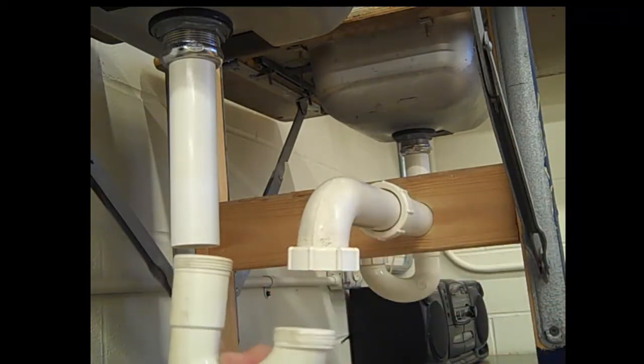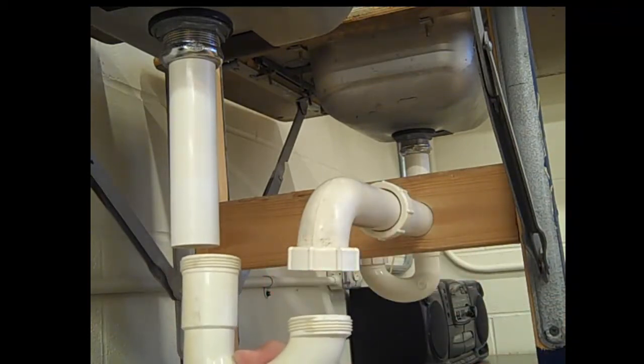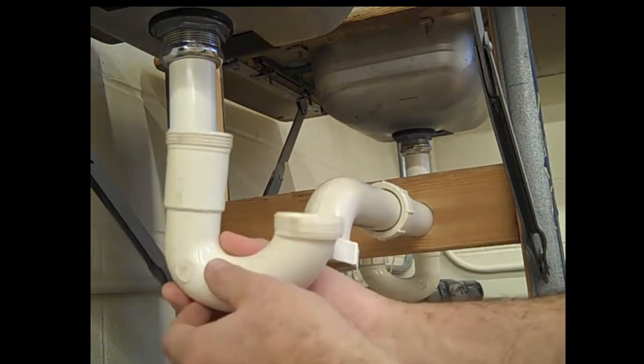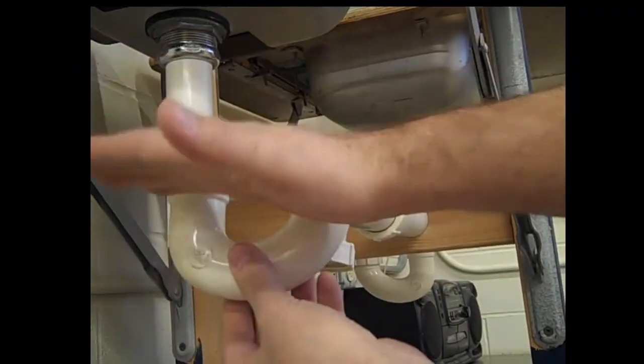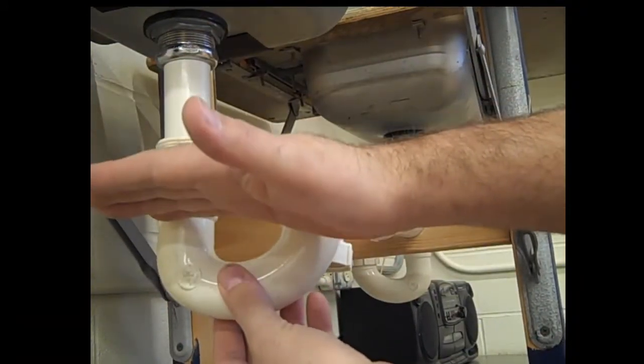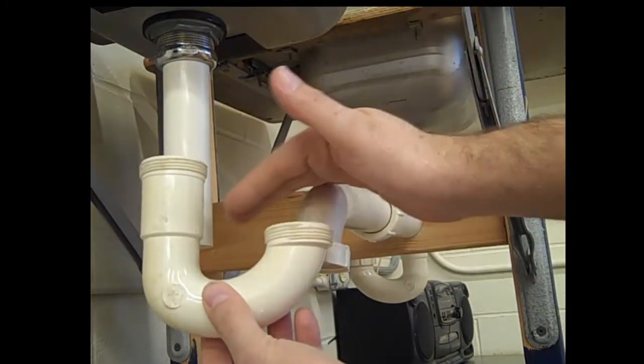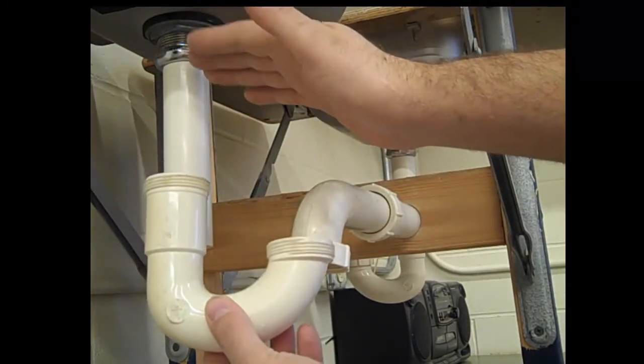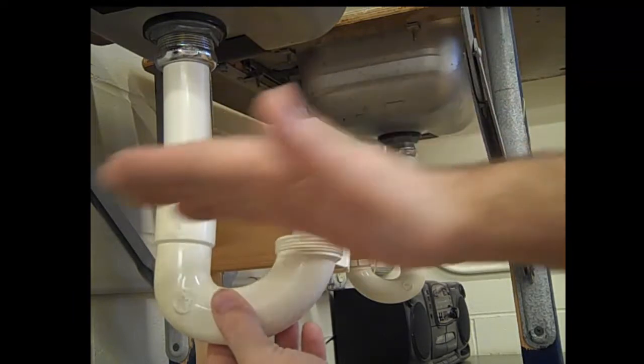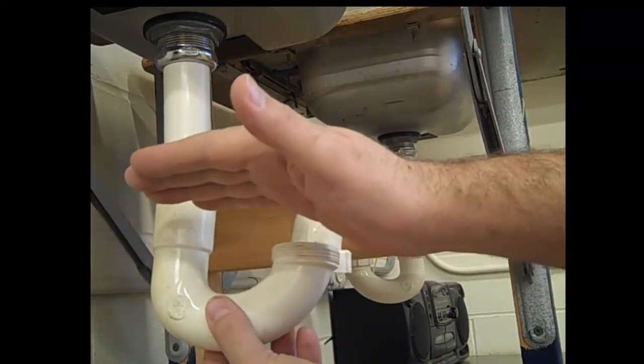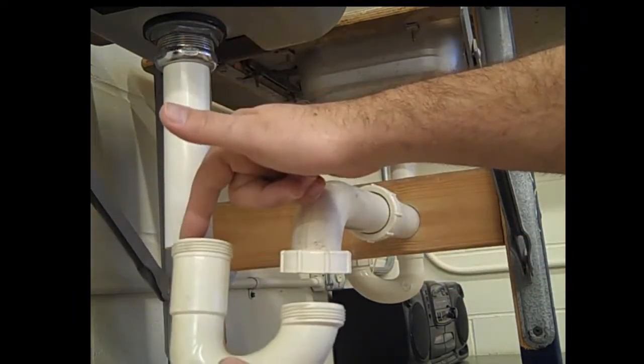The last part to this is the trap. The purpose of the trap is to hold water at this height, so sewer gas doesn't come back out through the sink. That would be very disgusting and smelly. Having water here prevents gas from coming up. But I have no way to thread these two together.